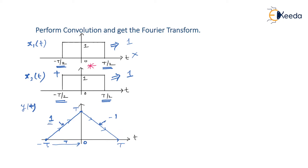Slope equal to 1 means the change in y equals the change in x. So when x changes by T, y also changes by T. Therefore, the triangle obtained has height equal to T and total width equal to 2T. Let us express this mathematically.